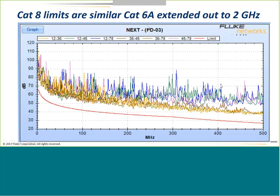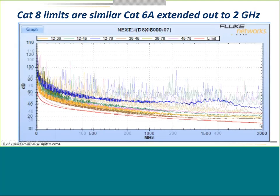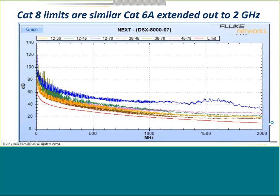Here's the NEXT graph — near-end crosstalk, the interference from one pair to another. On the vertical axis the strength of interference between pair combinations; on the horizontal axis frequency. Category 6A goes to 500 MHz — basically using the same limit line, we're just stretching it out to two gigahertz. Here is a passing NEXT measurement of a Category 8 link.